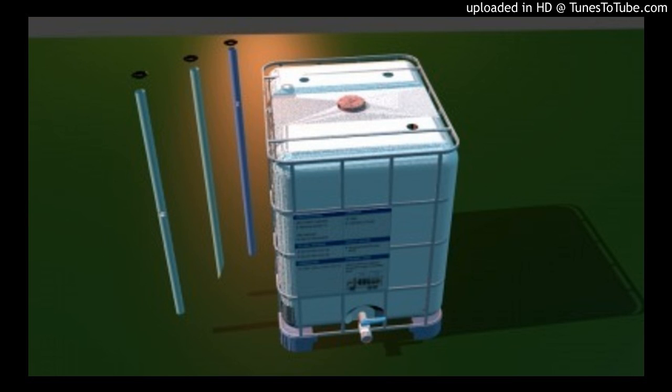Sand any rough edges and soap up the pipe and the inner ring of the uniseal and firmly push the pipe through the uniseal, twisting as you go, until it reaches the bottom of the tank and stops.